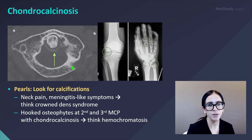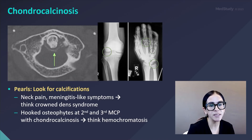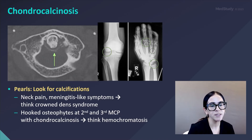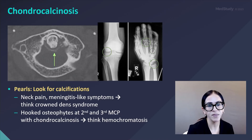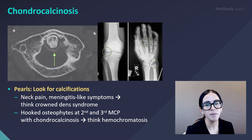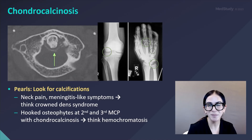A rare condition to think about is CBPD causing what's called crowned dens syndrome, where you can see calcification around the dens. These patients typically present with acute neck pain and meningitis-like symptoms such as fevers. Also, when you see hooked osteophytes at the second and third MCPs with chondrocalcinosis, remember hemochromatosis.